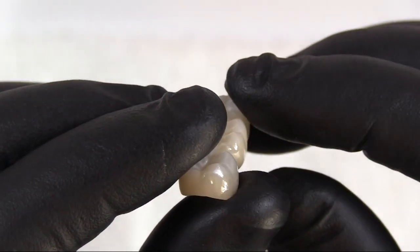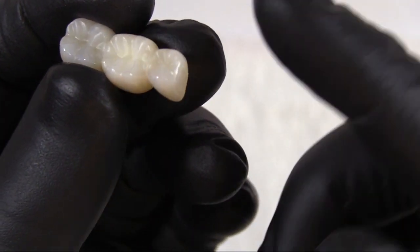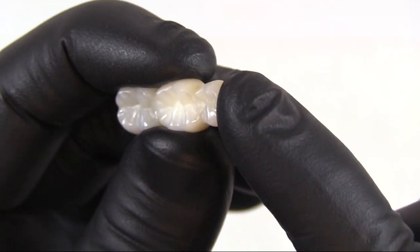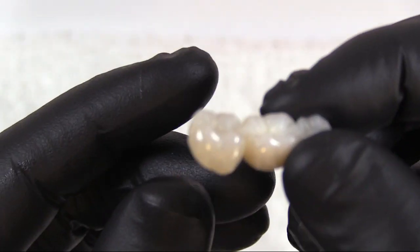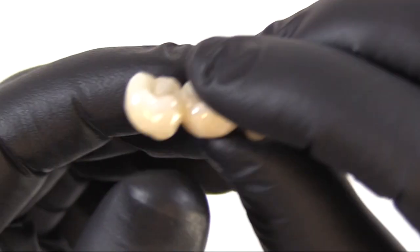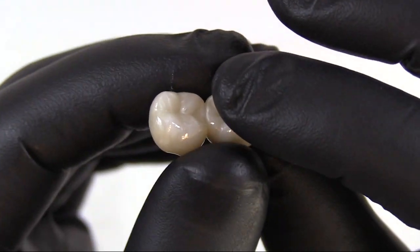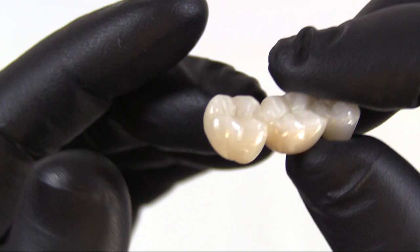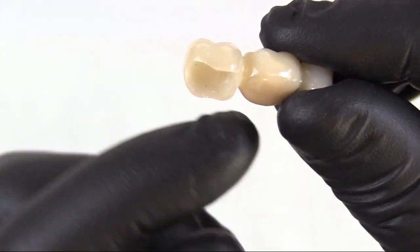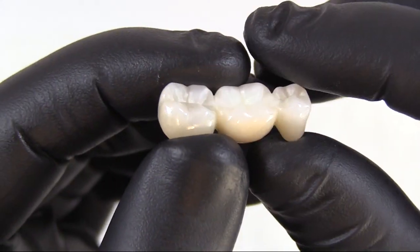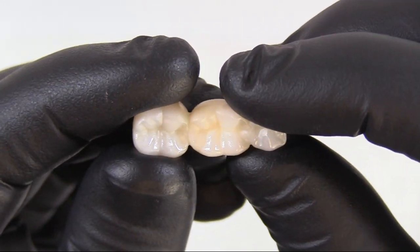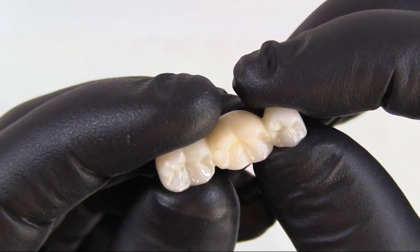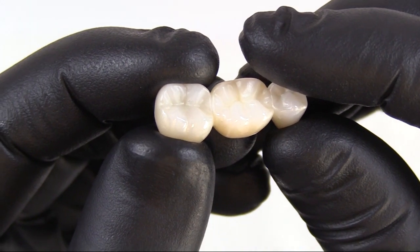We always want to check contacts. With a nice acufilm occlusion paper, we can mark the interproximals when we seat it intraorally and make sure we have nice interproximal contacts without any heaviness. If the contact is too heavy, it might impact the full seat, as can the ovate pontic if it's too heavy on the edentulous space.